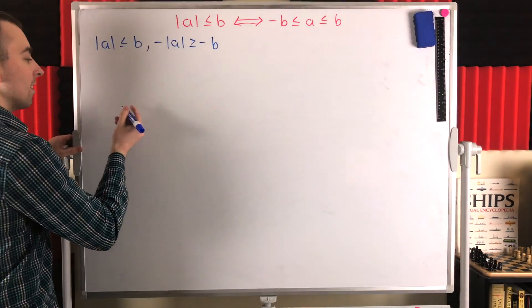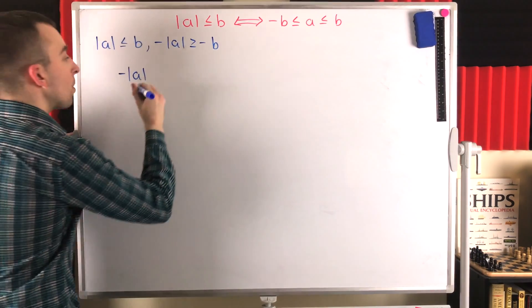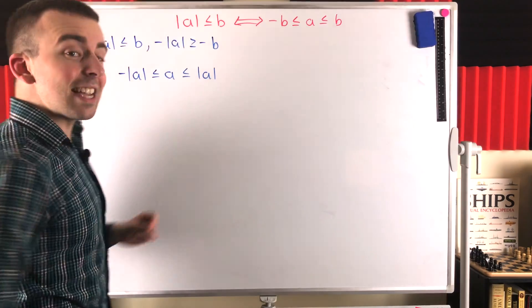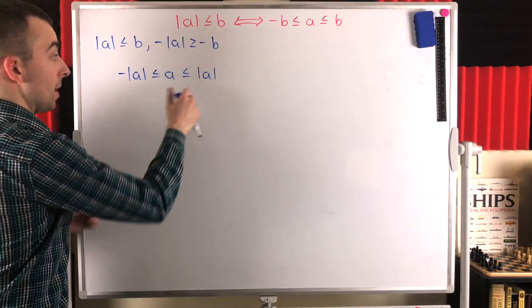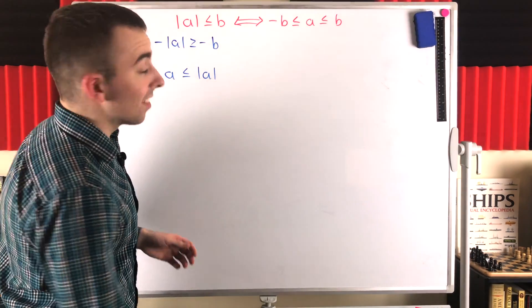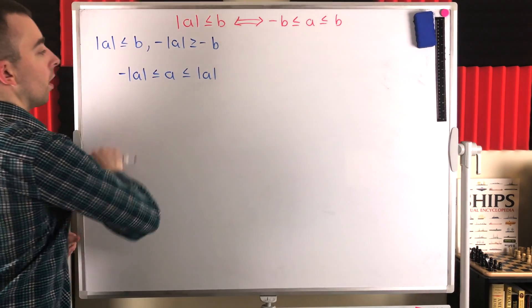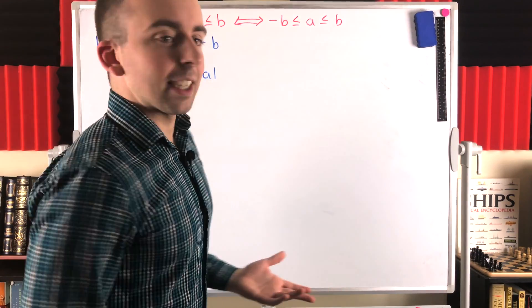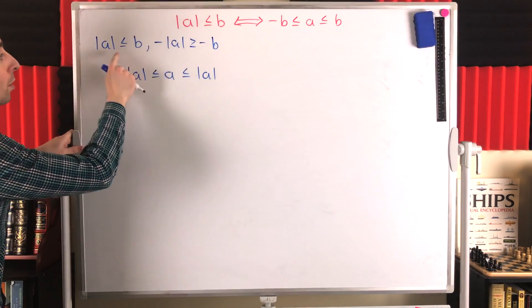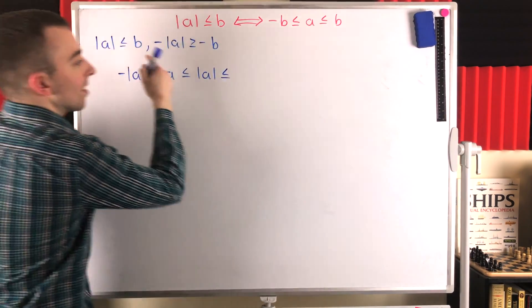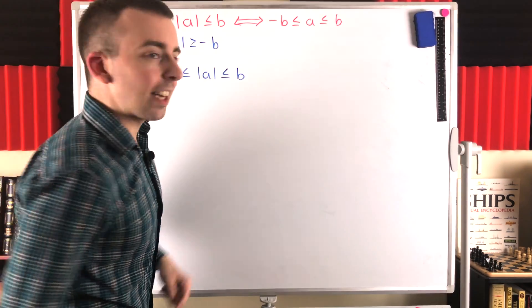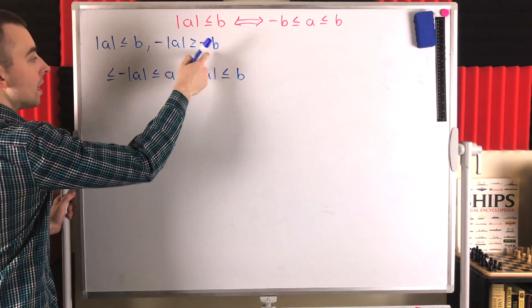Then we just have to notice one more thing. Remember, if you've studied some real analysis, the negative of the absolute value of a real number is less than or equal to the number, which is less than or equal to its absolute value. That should seem pretty obvious: if A is positive, it's going to be greater than its negative absolute value and equal to its absolute value. If A is negative, it's going to be equal to the negative of its absolute value and less than its absolute value. If it's zero, then these will all be equal. So this is a relationship we know is true. Then we just attach things at either end: the absolute value of A is less than or equal to B, so we stitch that on. And the negative of the absolute value of A is greater than or equal to negative B, so we stitch that on as well.